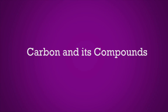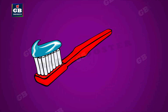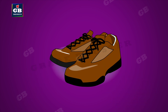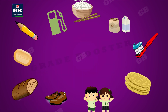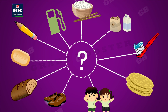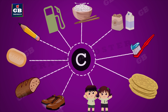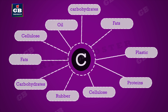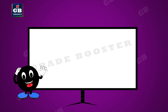Carbon and its compounds: as your day begins you need toothpaste, soap, milk, bread, paper, pencil, shoes, uniform, cosmetics, petrol, rice, rotis, etc. These are the important things you need for your daily routine. Do you find anything common among them? Yes, they're all made up of carbon compounds — compounds that have carbon as their constituent are called carbon compounds.